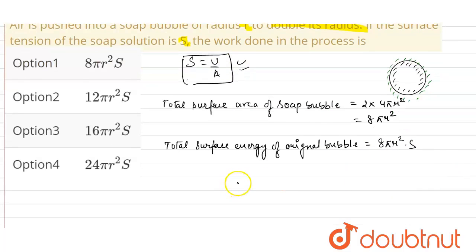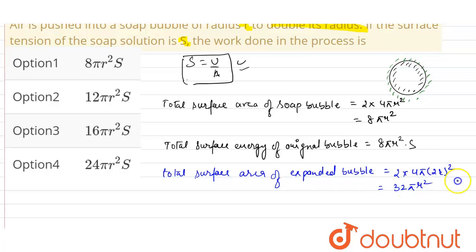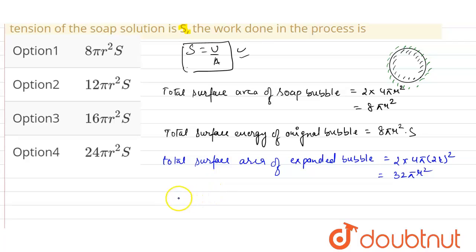Now, when we push air into the soap bubble and the radius becomes 2r, the total surface area of the expanded bubble will be 2 × 4π(2r)², which gives us 32πr².